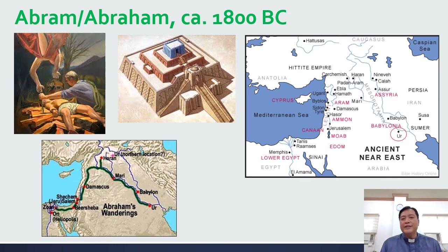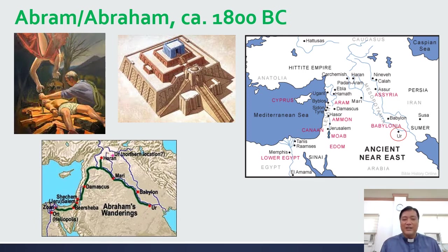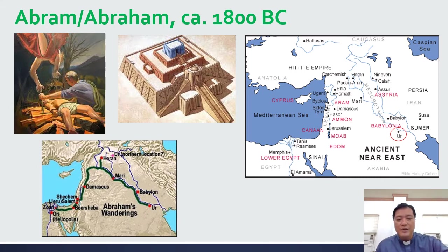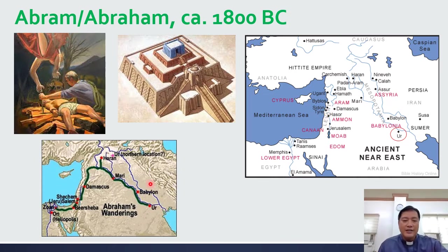Abraham lived around 1800 BC. You see a familiar scene in the life of Abraham, and because it was from Mesopotamia, you see those towers — you'll know more about that when we study Mesopotamia. This is where Abraham came from: Ur. Going up to Haran, and then going down to the promised land.